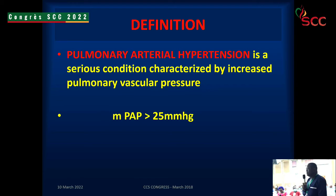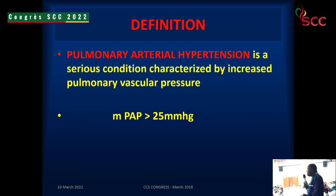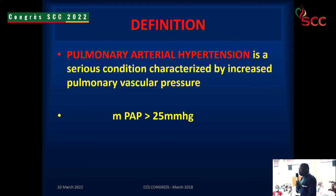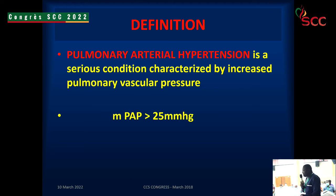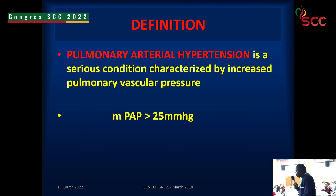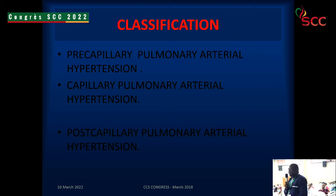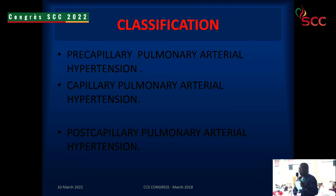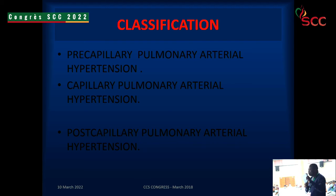We had about 20 millimeters of mercury referenced earlier. But for the invasive cardiologist when you are in the cath lab, pulmonary arterial hypertension is a serious condition characterized by increased vascular pressure, with a mean pulmonary arterial pressure greater than or equal to 25 millimeters of mercury. To simplify classification, we specify the capillary wedge pressure — that is where our target lies.